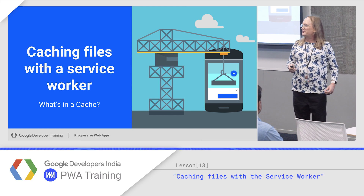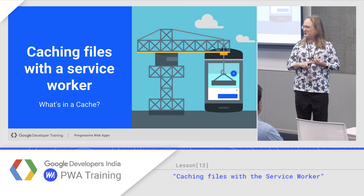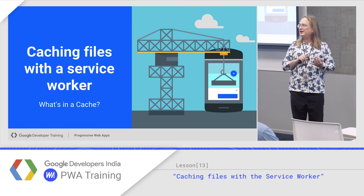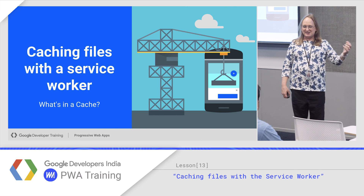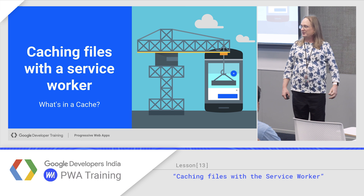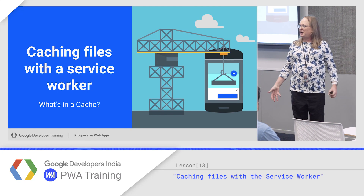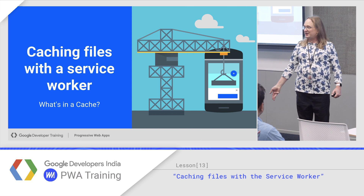So, caching files with a service worker. You've done promises, you've done fetch, you've built a service worker. We've talked about very basic caching using a simple approach with a list of static files. You've done things with SW pre-cache to write a service worker. But what if you need to do more complicated things? What if you need to get into the cache API directly? Let's go ahead and walk through that.